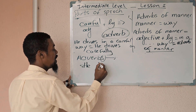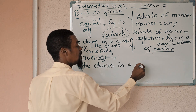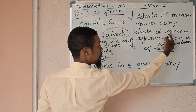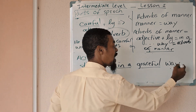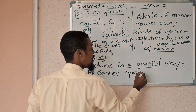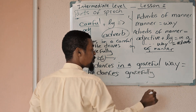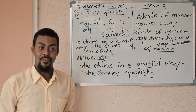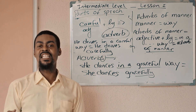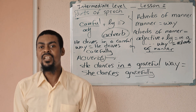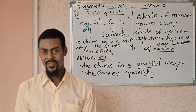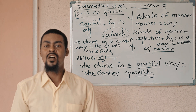Let's look at another one. She dances in a graceful way — graceful is an adjective. She dances gracefully. Gracefully is the adverb. I teach in a clear way — I teach clearly. I walk in a slow way — I walk slowly. This is what I call adverbs of manner.